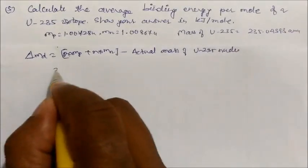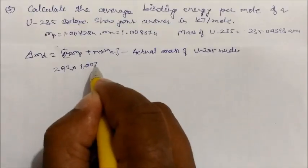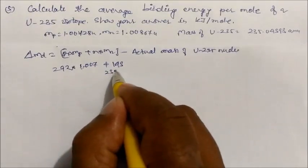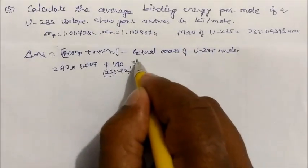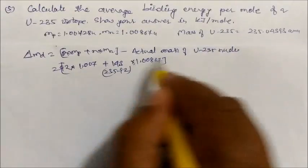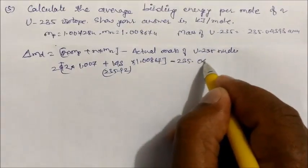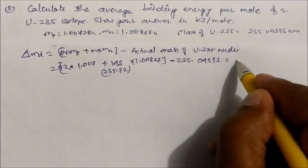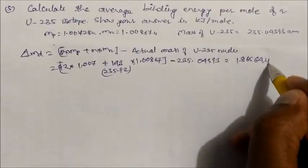Substituting: 92 × 1.007 for protons, plus 143 neutrons (since 235 − 92 = 143) × 1.00867, minus the actual mass 235.04393 u. On solving, the mass defect ΔM = 1.86564 u.